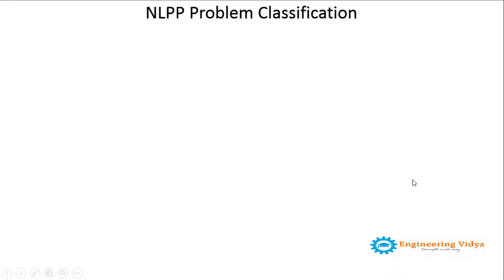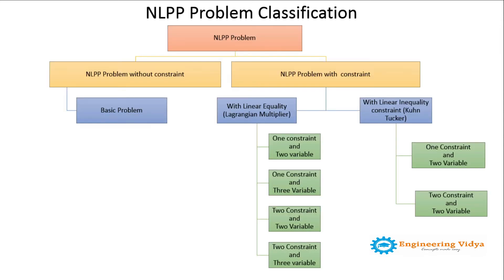Hello everyone, welcome to the second lecture of NLPP problems. In this lecture, we will see how the categorization of NLPP problems are made, which can be understood with the help of this tree diagram. An NLPP problem is of two types: either it has a constraint, or it does not have a constraint.